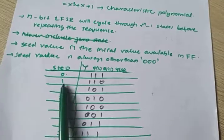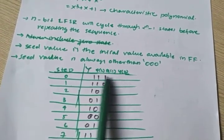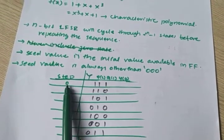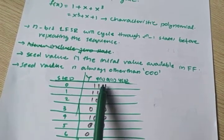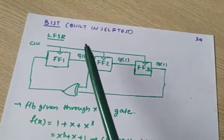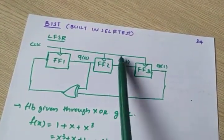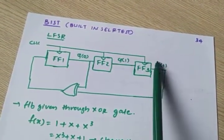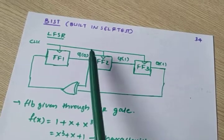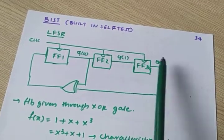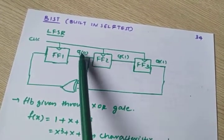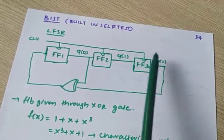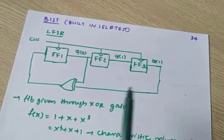This is the clock table with the corresponding flip-flop outputs. For step 0, I am keeping the initial values as 1 1 1 — Q0 = 1, Q1 = 1, Q2 = 1.